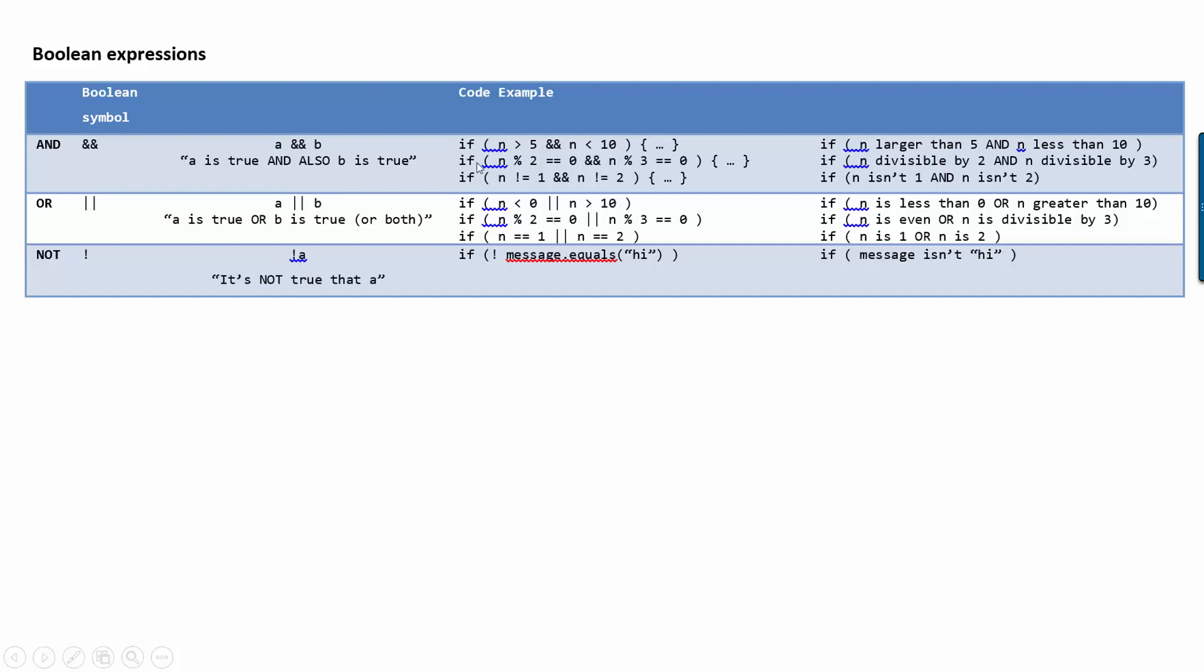So here are some examples. Here we're saying if N is larger than 5 and also N is less than 10. So in other words, is N between 5 and 10? Here we're saying if the remainder when you divide N by 2 is 0 and also the remainder when you divide N by 3 is 0. So in other words, if N is divisible by 2 and also N is divisible by 3. Here we're saying if N is not 1 and also N is not 2. For the ors, we're saying is it true that N is less than 0 or larger than 10? Is it true that N is divisible by 2 or divisible by 3 or both? Is it true that N is 1 or N is 2?